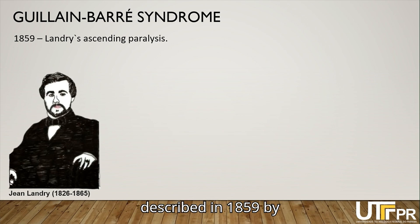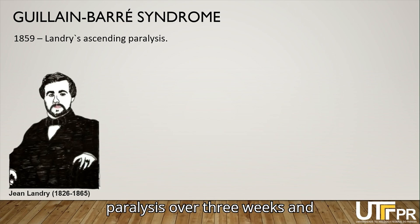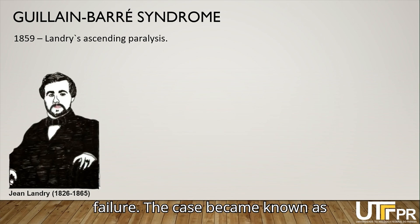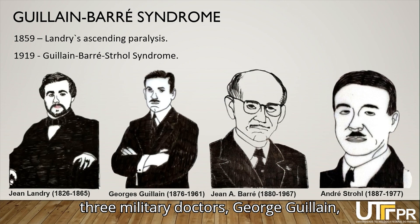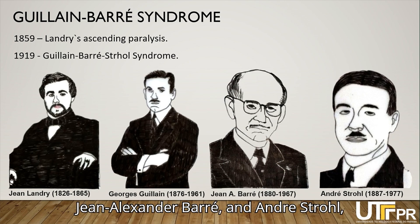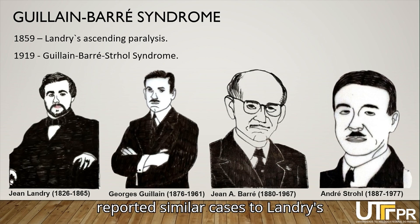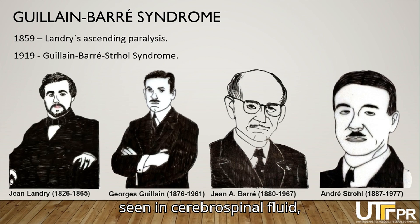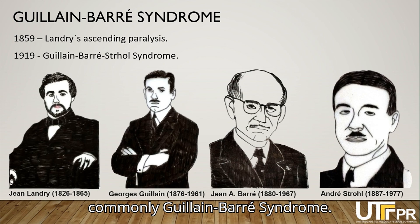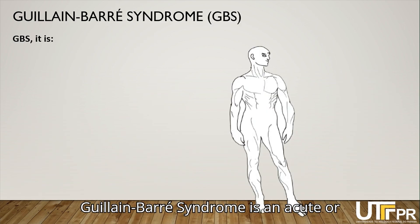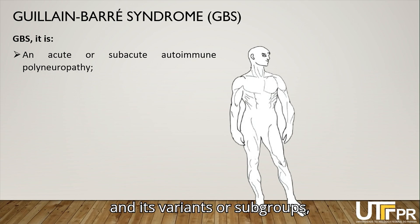Guillabar Syndrome was initially described in 1859 by Landry, who described a case of ascending weakness that progressed to paralysis over three weeks and ended in death due to respiratory failure, becoming known as Landry's ascending paralysis. Years later, in 1919, three military doctors — George Guillabar, Jean Alexander Barr, and Andre Stroll — reported similar cases but with albuminocytological dissociation seen in cerebrospinal fluid, CSF, becoming known as Guillabar-Stroll or more commonly Guillabar Syndrome.